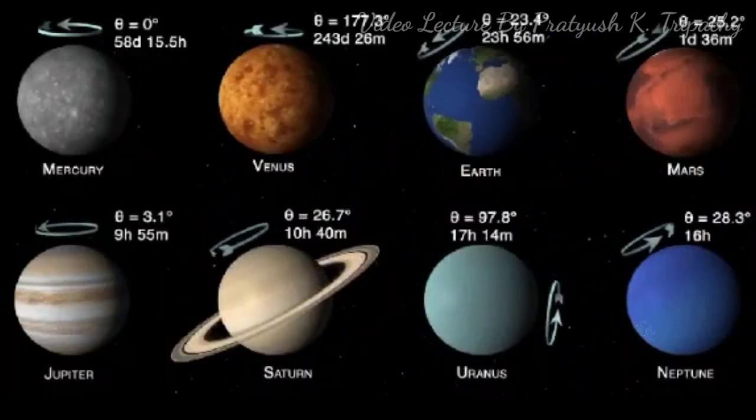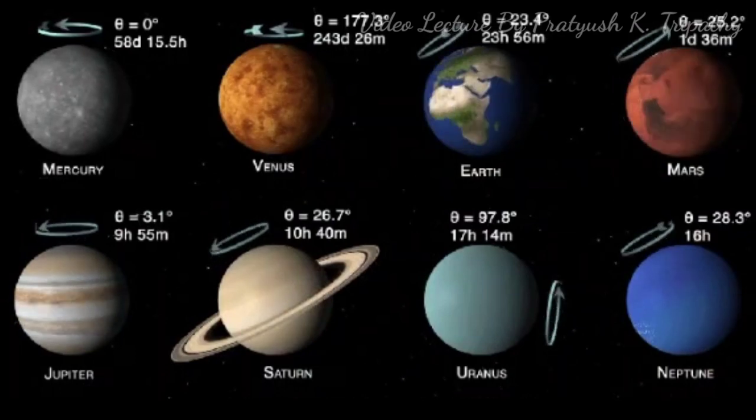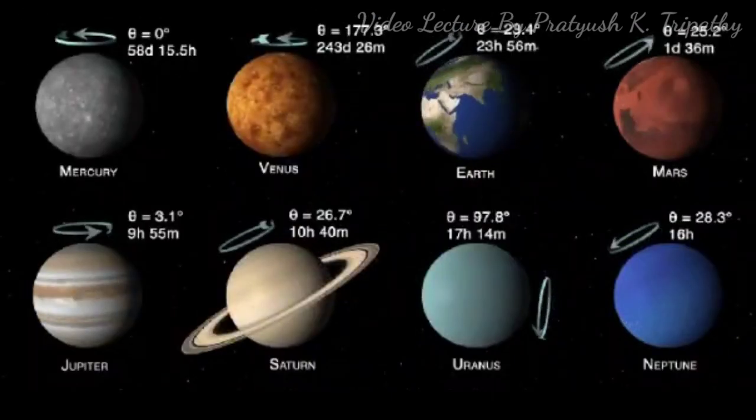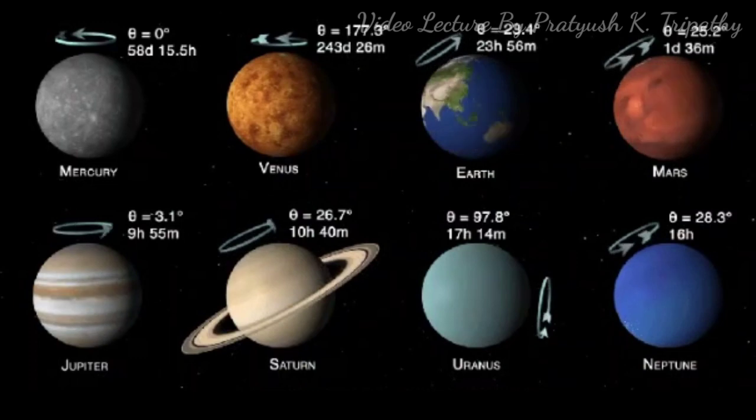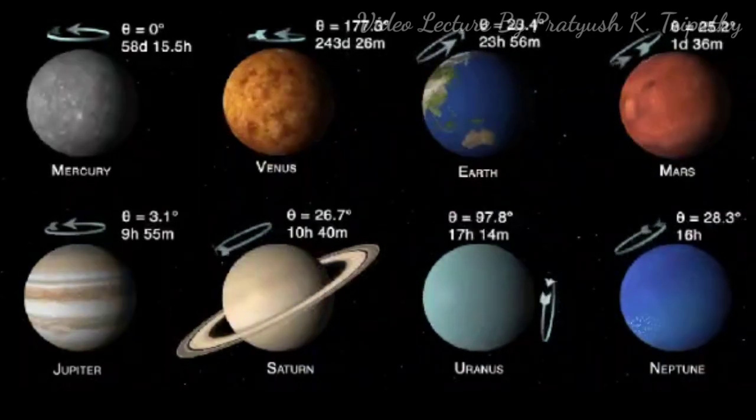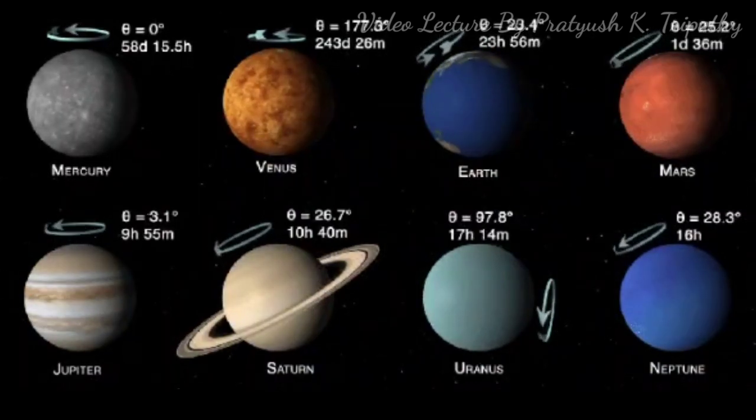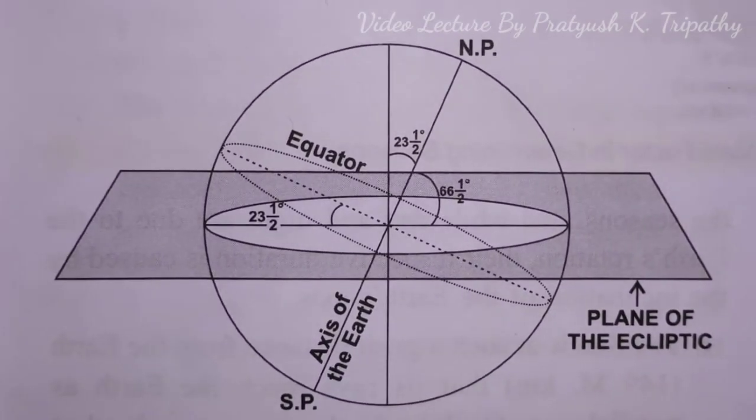The Earth spins on an imaginary line called axis. The north of this line is called the North Pole and the South of this axis is called the South Pole. The Earth rotates on this axis but it is not at right angle to the plane of the revolution. It makes an angle of 66 and a half degrees with the plane of ecliptic and is tilted 23 and a half degrees from the line perpendicular to that plane.